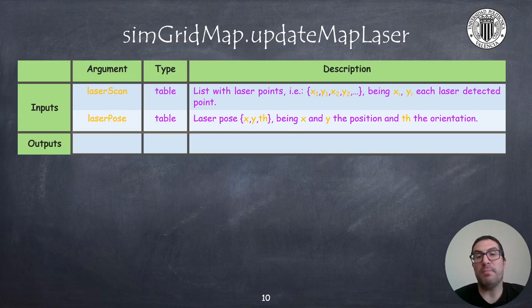Finally, the updateMapLaser function is the one that does all the dirty work in order to update the map based on the laser information and its position. This function must be typically used within the sysCall_sensing function, once you have your laser update.